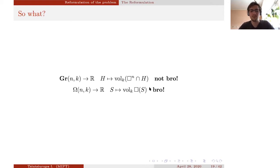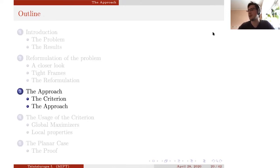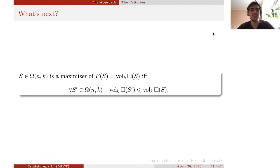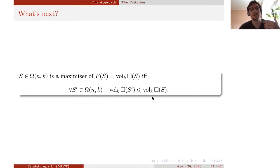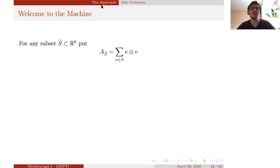Now let me explain how exactly we solve the problem. The only thing we have is the definition of the maximal value of the function: something is a maximizer if for any other argument, the value obtained is at most what we had before. We use this to derive criteria for the maximizer in terms of tight frames. For a subset S-tilde of R^k, define the operator A_S as the sum of square tensor products of the vectors. Sets of vectors spanning the whole space are called frames.